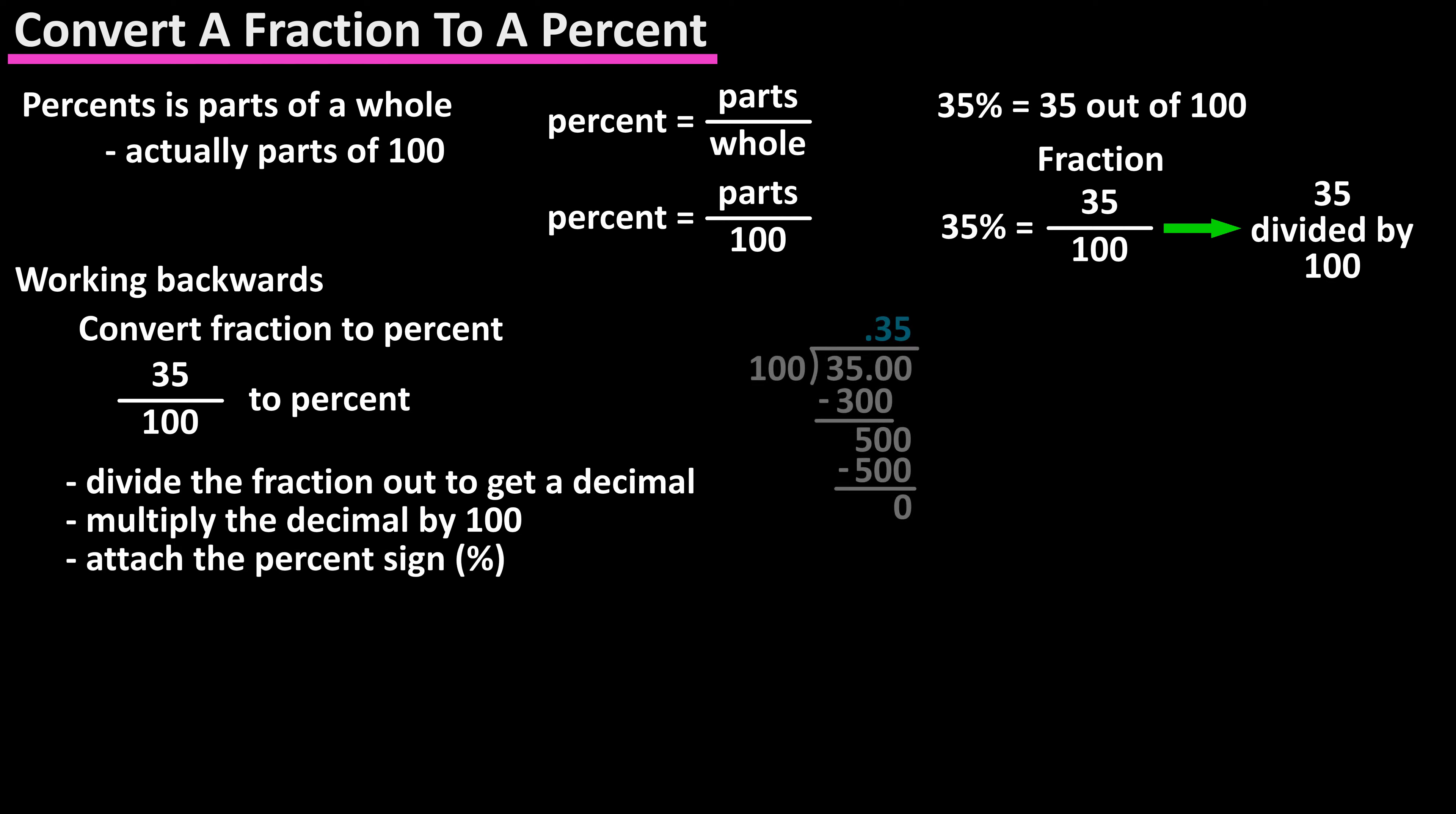Doing the division, 35 over 100 is 0.35, multiply 0.35 times 100 to get 35, and attach a percent sign to get 35%, but we can actually take a shortcut once we have the fraction in decimal form.